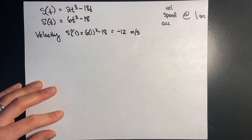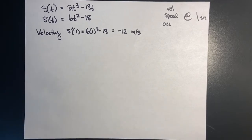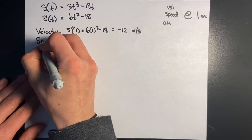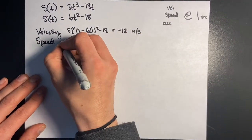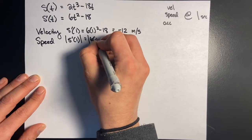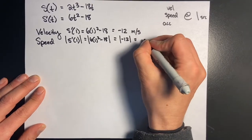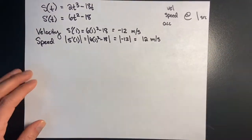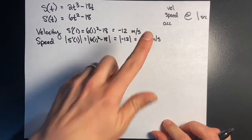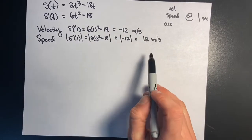Before you say 'negative 12 meters per second — you can't do that,' sure you can if you're going backwards. Velocity gives us direction. If I care about speed, I take the absolute value of that same number: |negative 12| equals 12 meters per second. If the value was positive it stays positive; if negative it becomes positive. So I'm traveling 12 meters per second backwards.